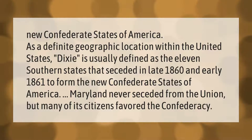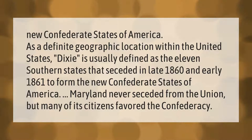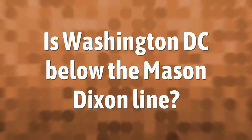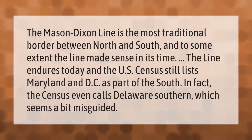As a definite geographic location within the United States, Dixie is usually defined as the 11 southern states that seceded in late 1860 and early 1861 to form the new Confederate States of America. Maryland never seceded from the Union, but many of its citizens favored the Confederacy.